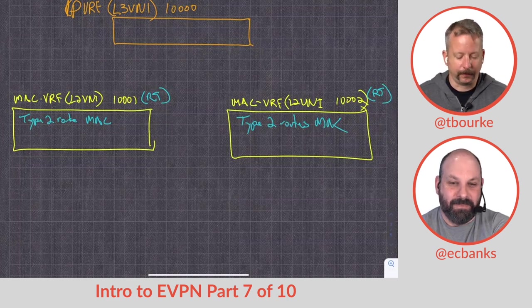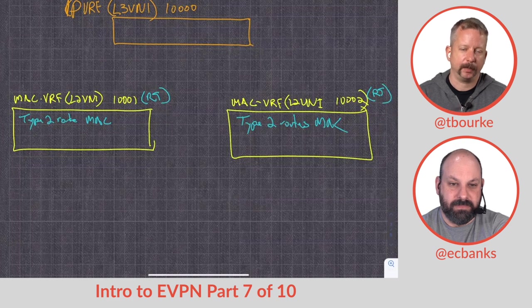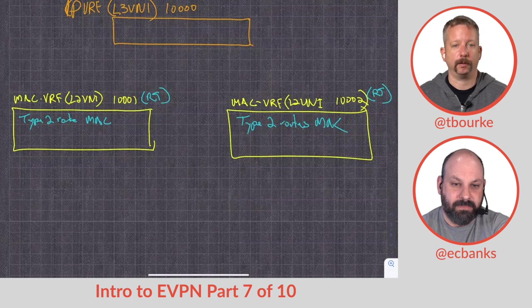So don't worry about that for now. What we do need to know is that our VNIs, our VXLAN segment IDs, VXLAN network identifiers, they need to be globally significant across our network, across our fabric. So we've got two different layer two VNIs.